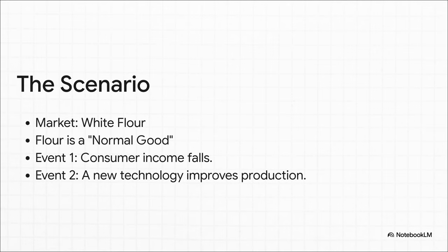So let's paint the picture. We're looking at the market for white flour. Now, economists call this a normal good. We'll talk about what that means in a sec. And two things are happening at once. First, people's incomes are going down. And second, a brand new technology is making flour production way more efficient.